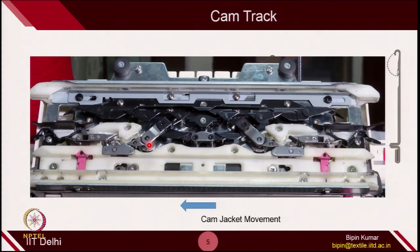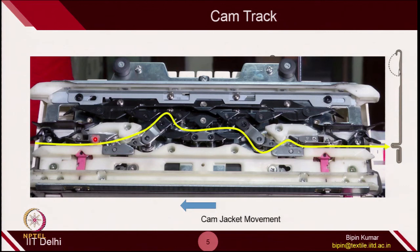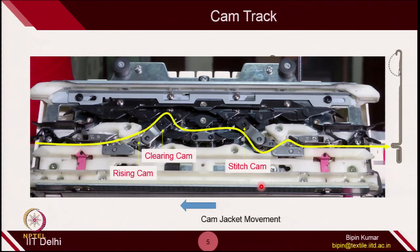When the cam jacket moves from right to left, the stitch cam now plays the role of clearing cam from the previous direction. The needle will first hit the rising cam (which was the up-throw cam before), then what was the stitch cam now becomes the clearing cam because it makes the needle rise. So depending on which direction the carrier is moving, the nature of these cams will change — it may act like a clearing cam or a stitching cam, depending on carrier direction relative to the needle bed.